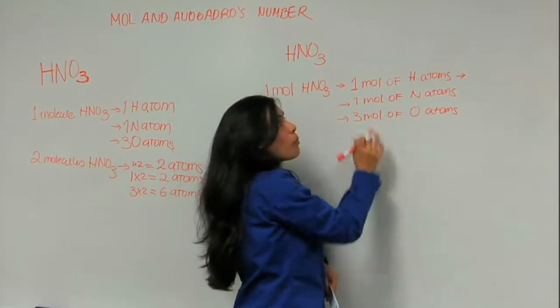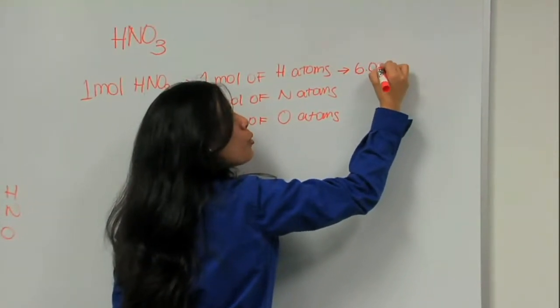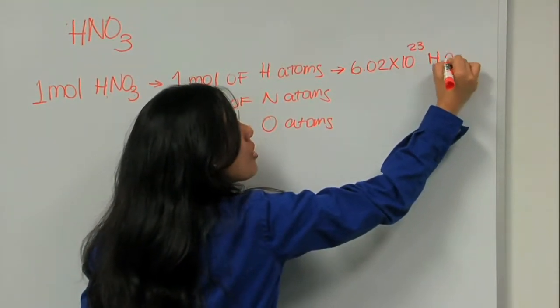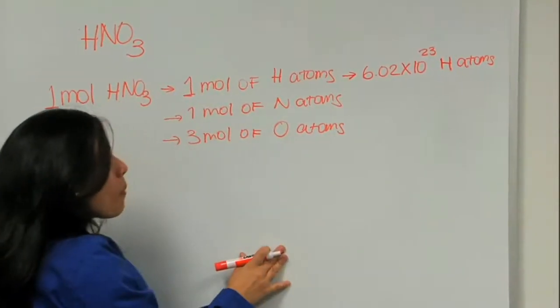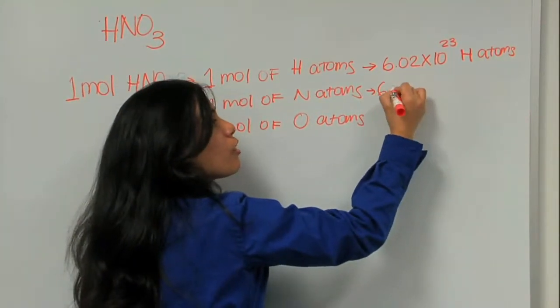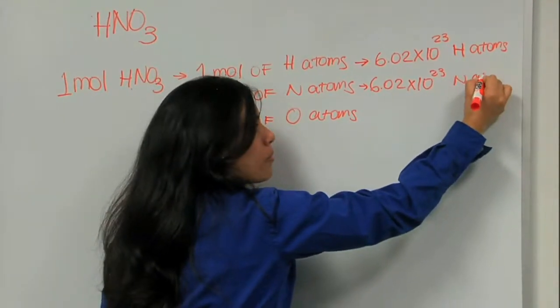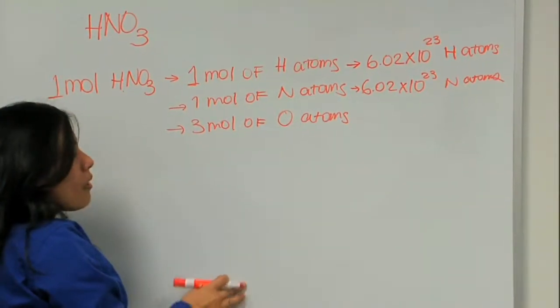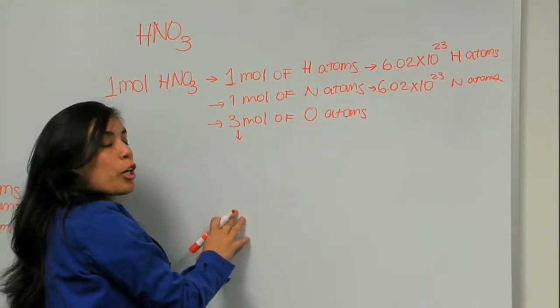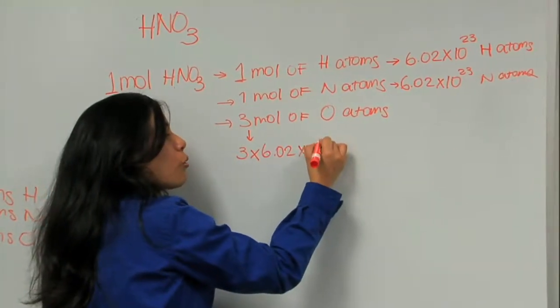Which means, remember that one mole is 6.02 times 10 to the 23, so it's going to be 6.02 times 10 to the 23 hydrogen atoms. If I have one mole of nitrogen atoms, one mole is equal to 6.02 times 10 to the 23 nitrogen atoms. Now we have to have three. This is going to be a little bit more complicated because I need to multiply 3 times 6.02 times 10 to the 23.